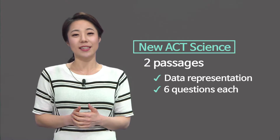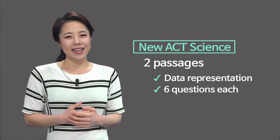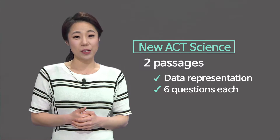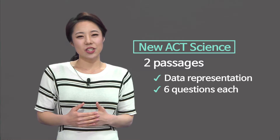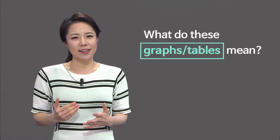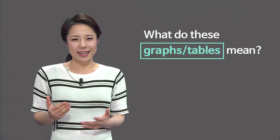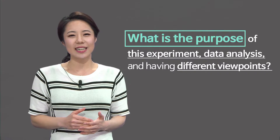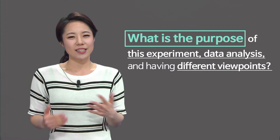For the two passages with six questions each: in the old format, data representation had five questions each. ACT Center added one question and eliminated one passage, giving six questions each across two passages. Six times two equals twelve questions. All you need to do is ask two things: what do these data, graphs, and tables mean, and what is the purpose of this experiment — data analysis and differing viewpoints.